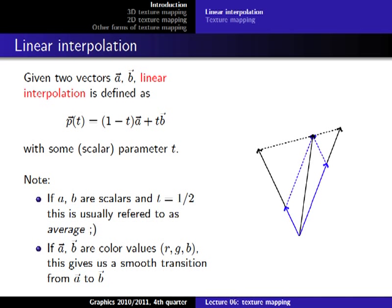We never talked about how to actually do this mathematically. The most straightforward way is linear interpolation. If all the vertices on the triangle have the same color, then all the pixels in between also have the same color. But if the vertices have different colors, we have to decide what color to give the pixels in between. Linear interpolation is basically a weighted sum of two values.